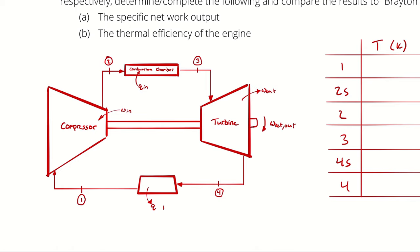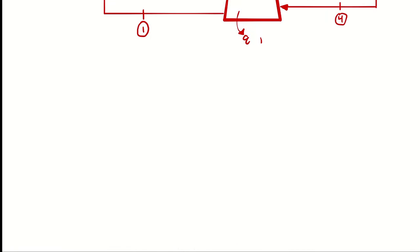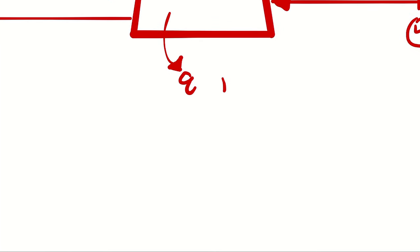But now we have to establish 2s and 4s as ideal representations of the state point. For the process from 1 to 2, for example, we have an isentropic efficiency. Therefore, we establish 2s as the state point that represents what the outlet would be if it were isentropic. And then 2 actual, which is just 2, which is the actual state point 2. And then the way that I get from 2s to 2 is by using the isentropic efficiency of our compressor. And the way that I get from 4s to 4 is by using our isentropic efficiency of the turbine.